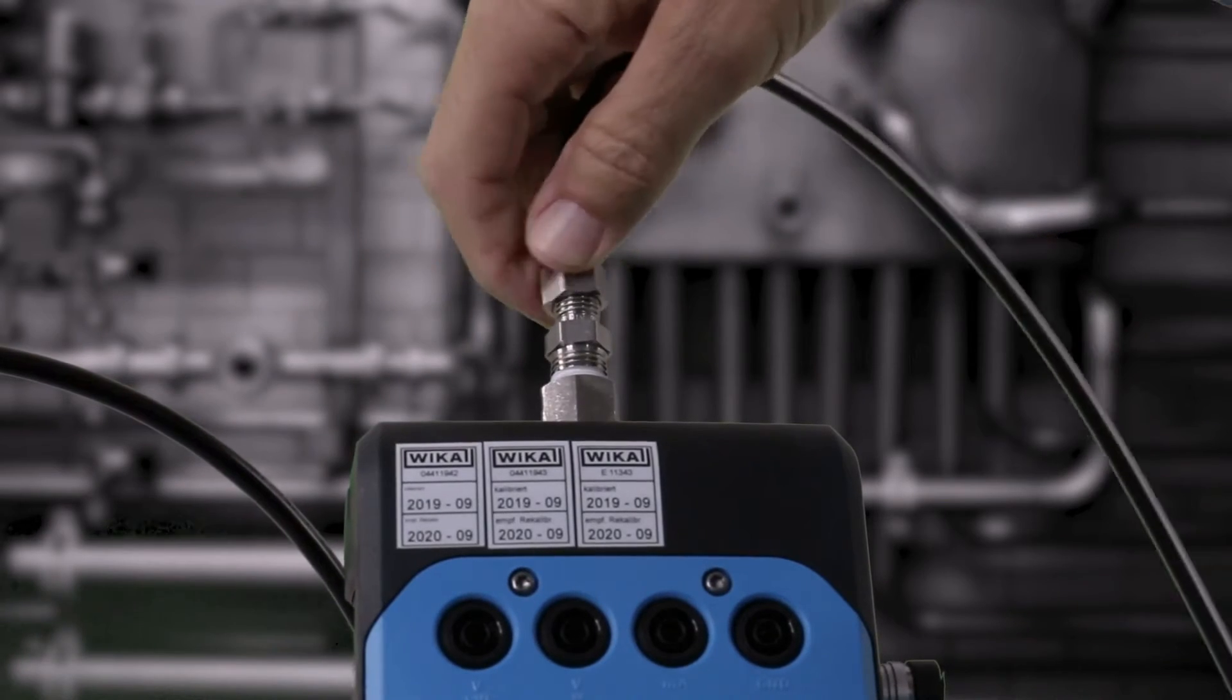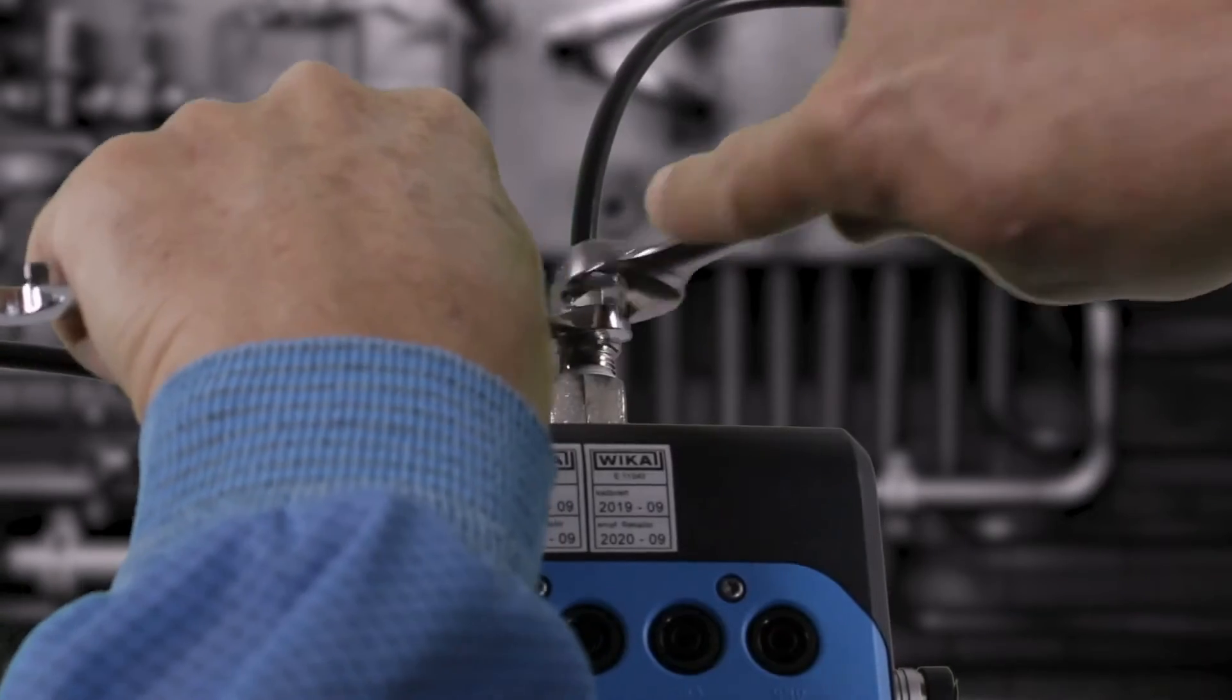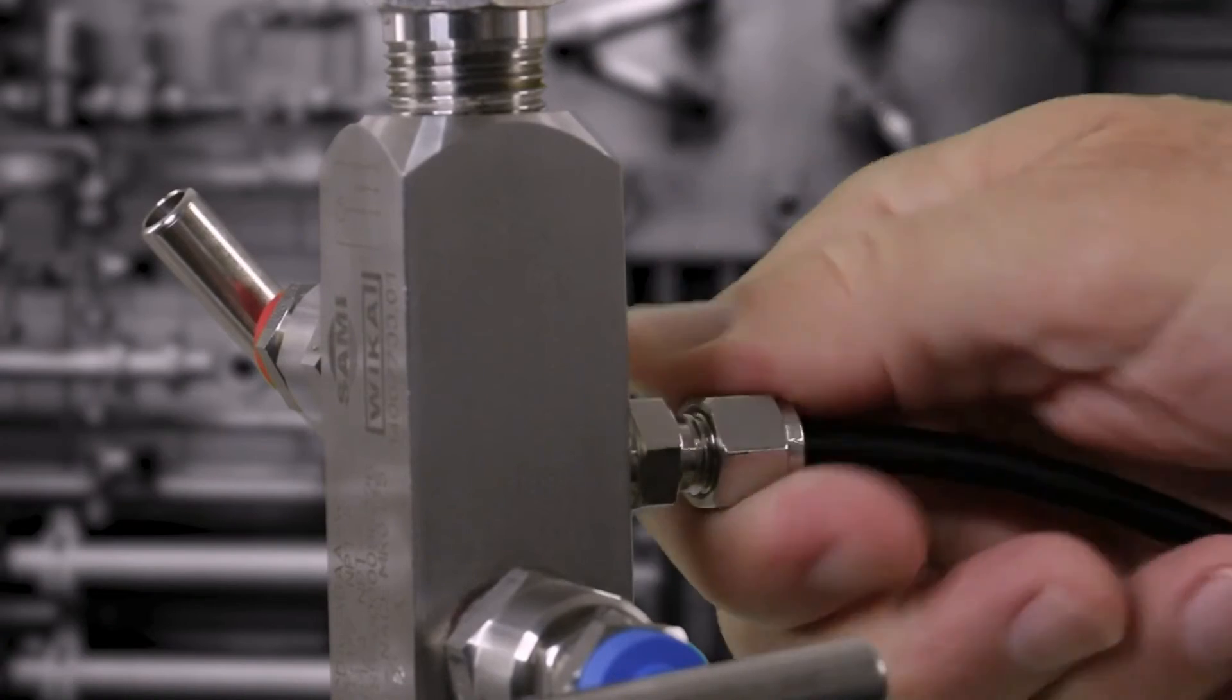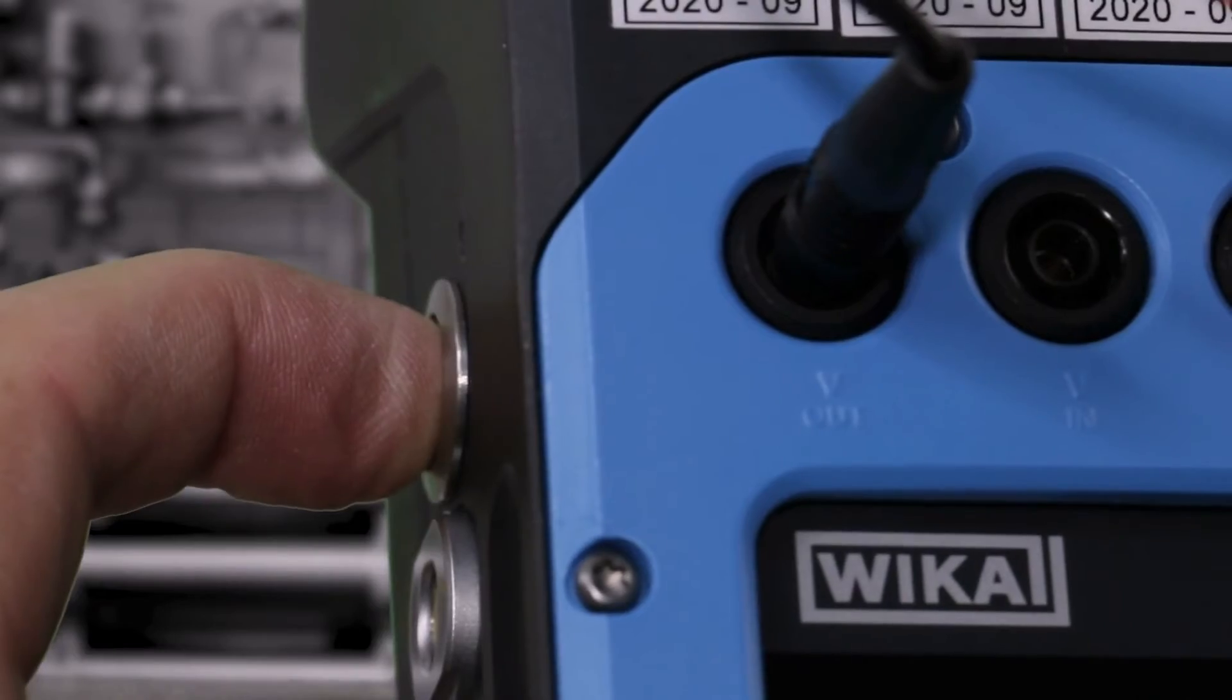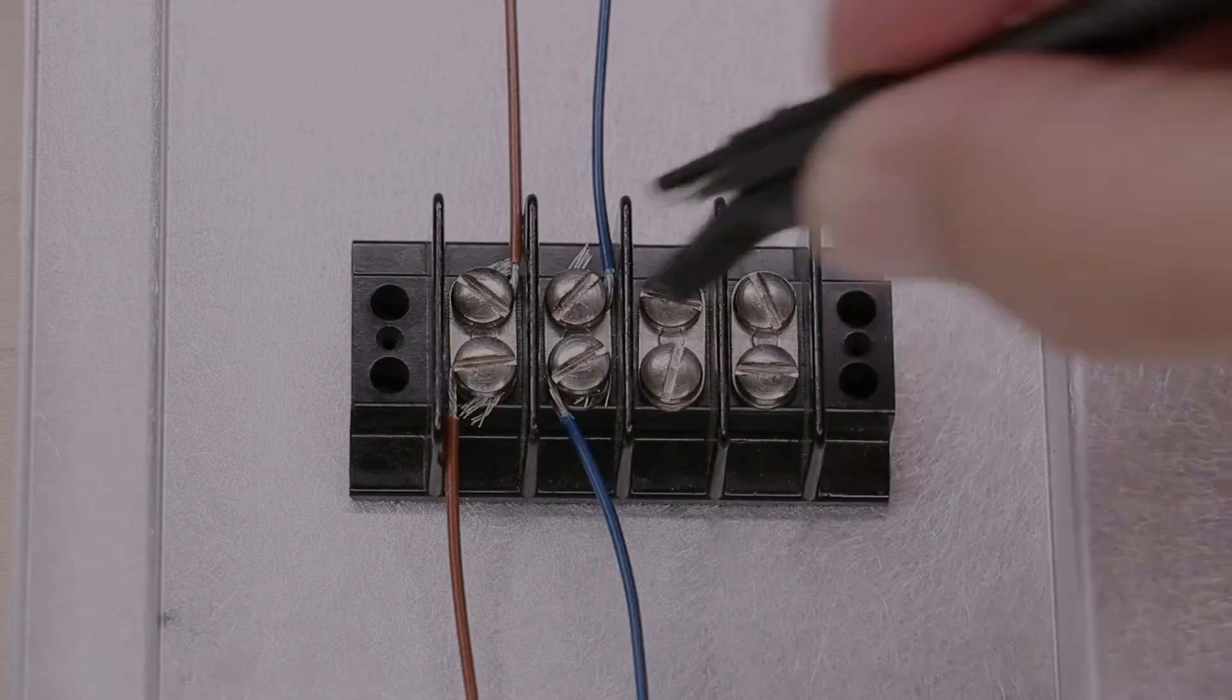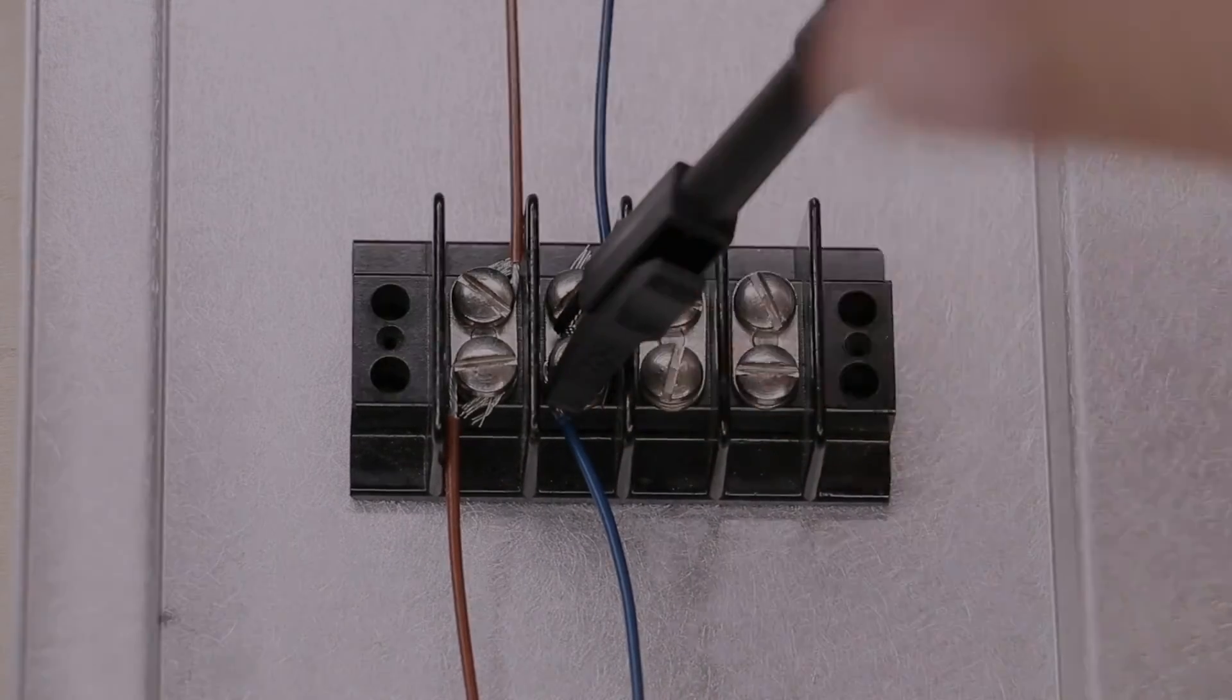Connect pressure rated tubing to the CPH7000X calibrator. Connect the other end of the tubing to the test port on the block and bleed valve. Turn on the CPH7000X. Connect the calibrator test leads to the terminals and to the calibrator.